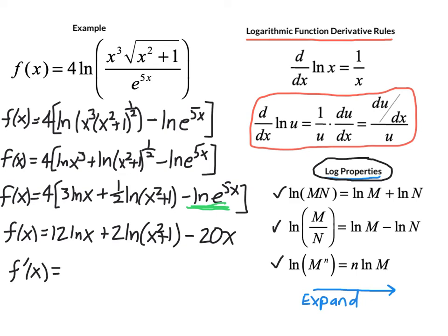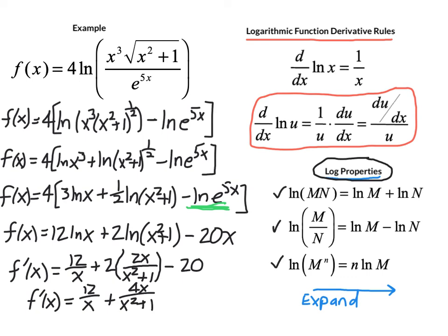So first here this is our simple log rule, the derivative of the natural log of x is 1 over x and I do have a constant factor of 12 so we're going to write that as 12 over x. Then here's our chain rule version of the log, so let's put the 2 out front, put u on the bottom and then take the derivative of u and write that on the top. The derivative of negative 20x is negative 20. Our final answer on our derivative is 12 over x plus 4x over x squared plus 1 minus 20.